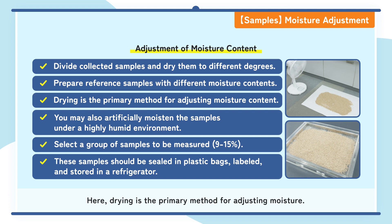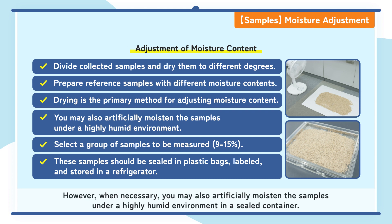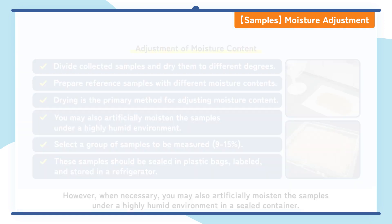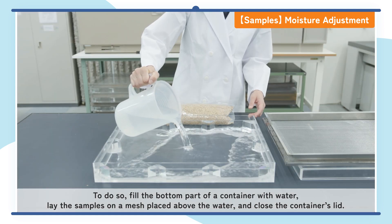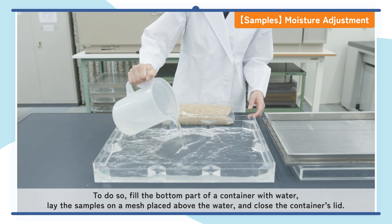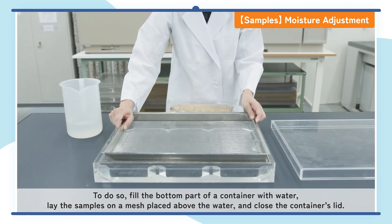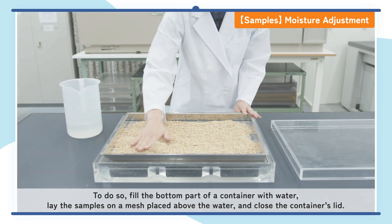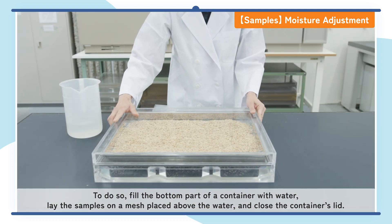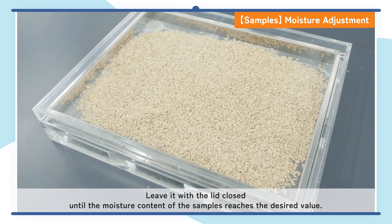Drying is the primary method for adjusting moisture. However, when necessary, you may also artificially moisten the samples under a highly humid environment in a sealed container. To do so, fill the bottom part of a container with water, lay the samples on a mesh placed above the water, and close the container's lid. Leave it with the lid closed until the moisture content of the samples reaches the desired value.